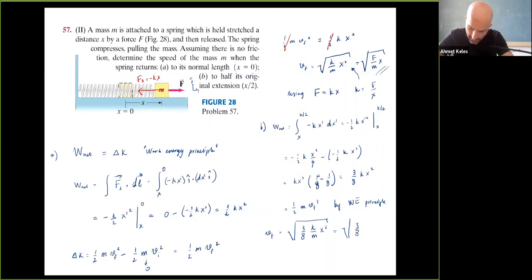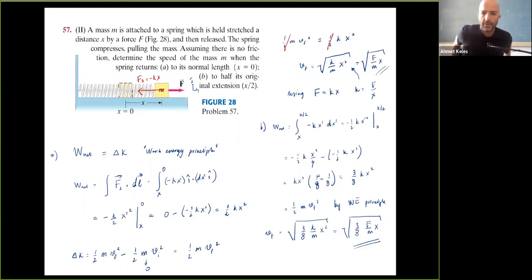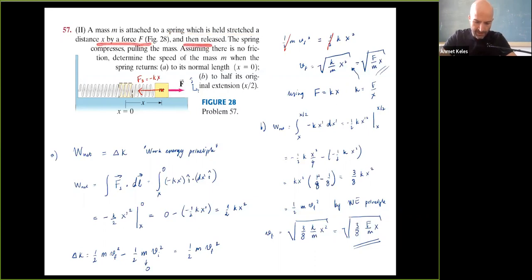Setting this equal to ½mv_final² by the work-energy principle, v_final = √(3/8 · k/m · x²). Substituting k = f/x gives v_final = √(3f x / (8m)). Note that we didn't include the applied force f in W_net because the mass is released — f disappears at that moment.